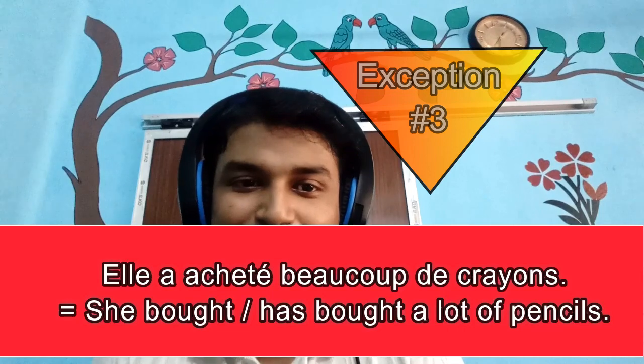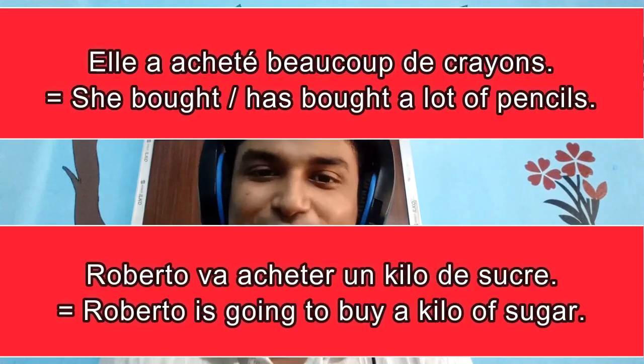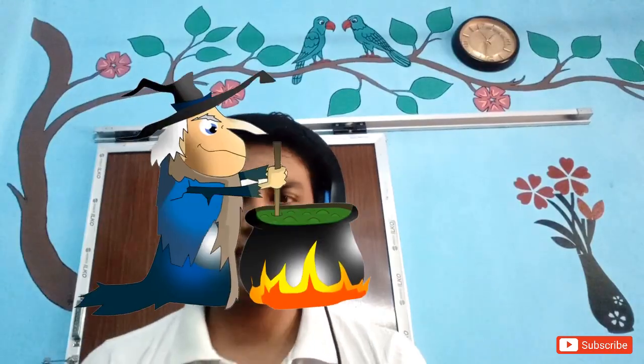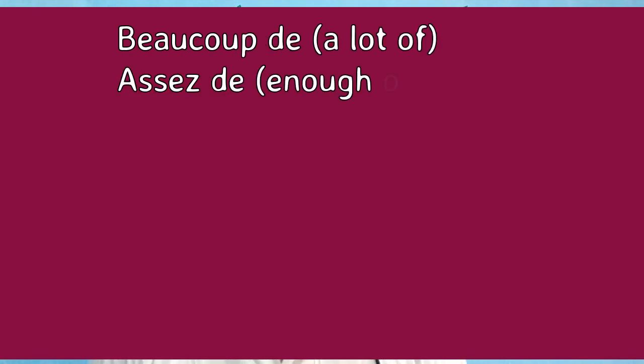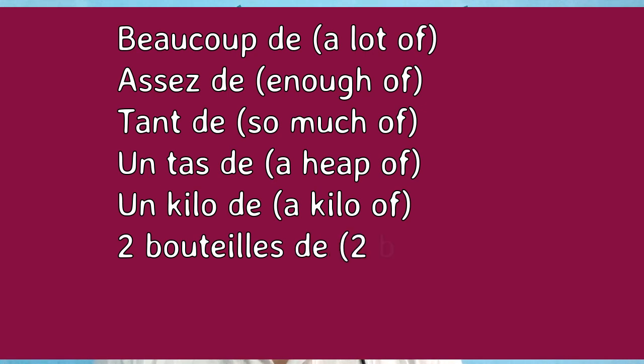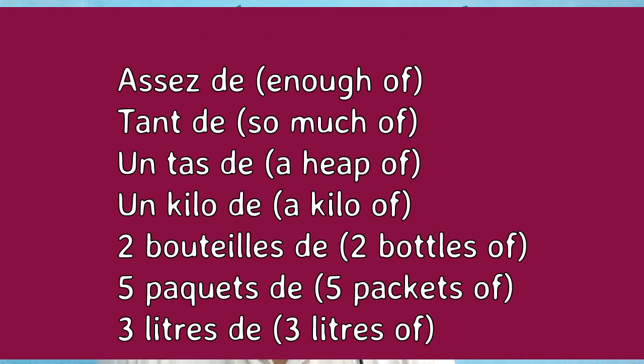Number three: 'Elle achète beaucoup de crayons' — she bought a lot of pencils. 'Roberto va acheter un kilo de sucre' — Roberto is going to buy a kilo of sugar. After an expression of quantity like 'beaucoup de,' 'assez de,' 'un tas de,' 'un kilo de,' 'deux bouteilles de,' 'cinq paquets de,' 'trois litres de,' etc., we will not use partitive but will use 'de' or 'd'.' So no more fear from exceptional cases — congratulations, you have learned L'article Partitif!